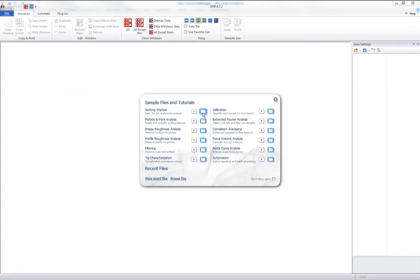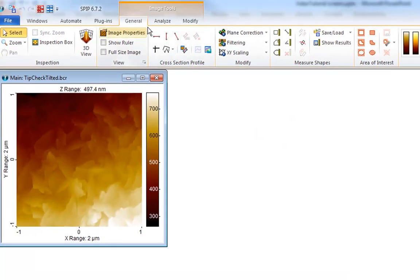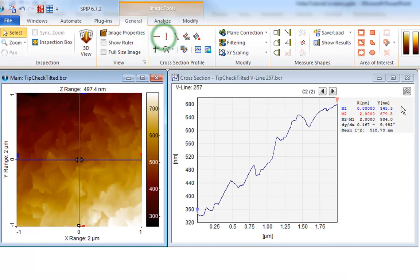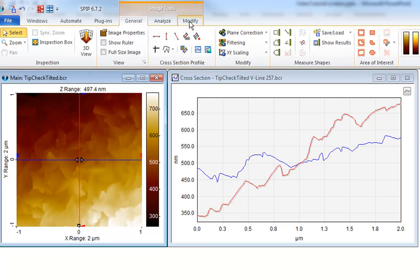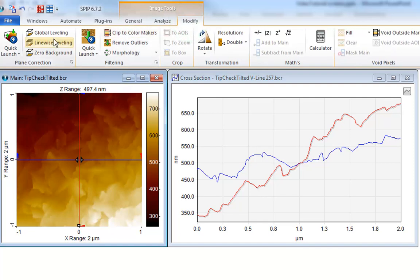Let's open this file. Using the cross-section profiling tools, it is seen that this scan has a slight tilt in both the X and Y direction. In the plane correction panel on the Modify ribbon tab, there are three push-button options.